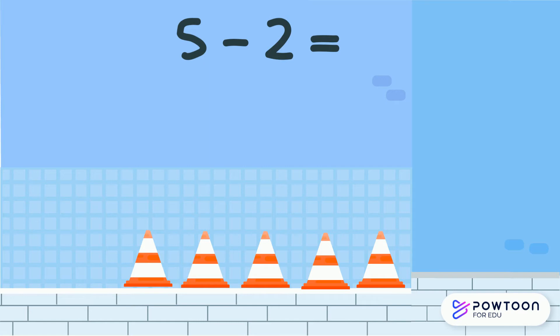Five take away two. We have five cones and we need to take away two. We are going to cross out two cones. Now we need to find out how many we have left over. One, two, three. Five take away two equals three.